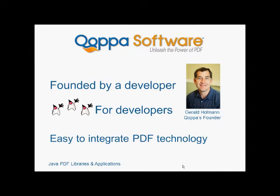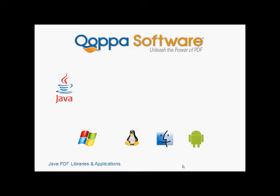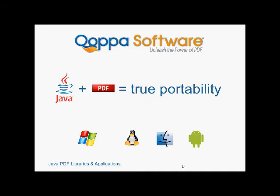In 2002, Gerald Holman was looking for reliable, easy-to-integrate PDF components. Not finding what he wanted, Gerald founded Copa Software to develop this PDF technology and offer it to other Java programmers. After all, Java is platform independent, and the P in PDF stands for portable. So Java PDF technology will ensure true portability on any platform — Windows, Linux, Unix, Mac, and now Android.